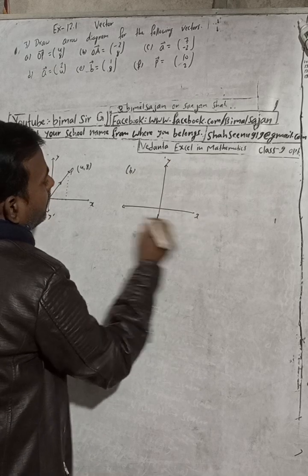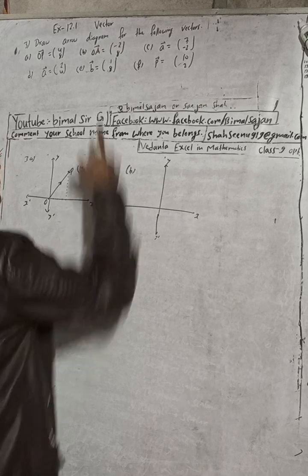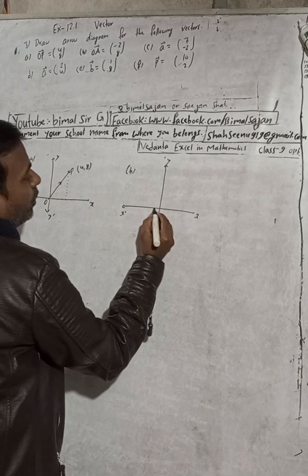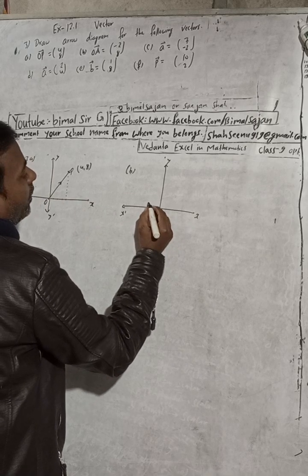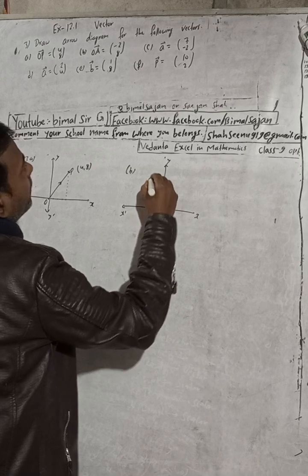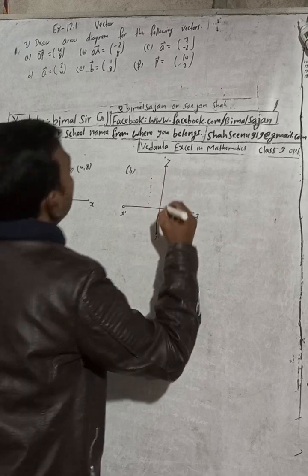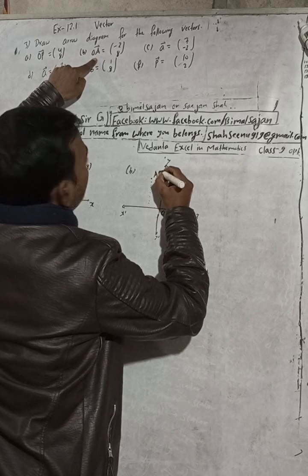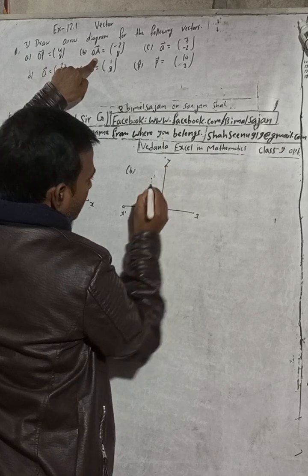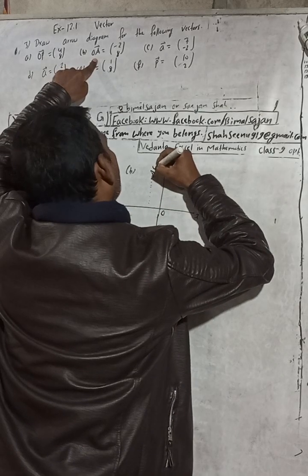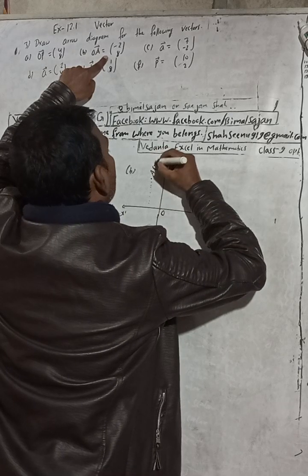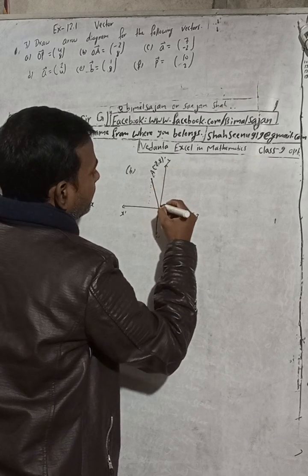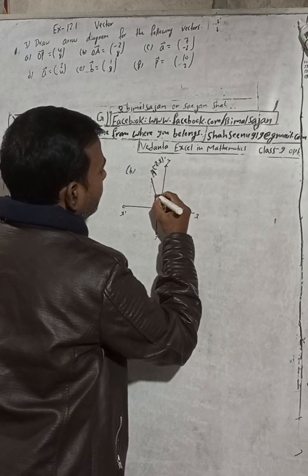Minus two means on the left side, plus means on the right. So minus two: go one, two to the left. And eight up: one, two, three, four, five, six, seven, eight. This is point A and this is the origin, so vector OA means from O to this A point. The A point is at minus two comma eight.